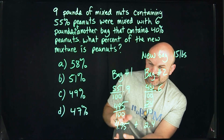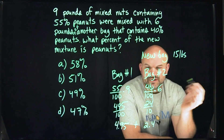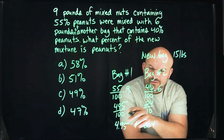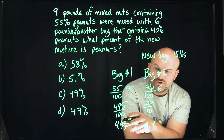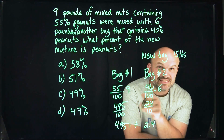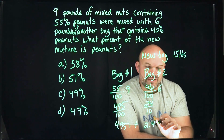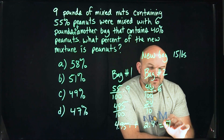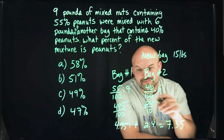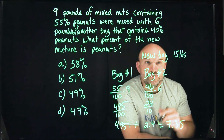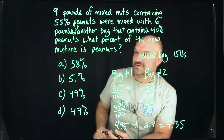So we're going to have the total peanuts from bag one plus the total peanuts from bag two: 4.95 plus 2.4. Adding those: 5 plus 4 in the hundredths gives 9 carry the 1; 9 plus 2 plus 1 is 7.35. That is the total number of peanuts in bags one and two combined. But remember, what they're looking for is the percent of the new mixture.